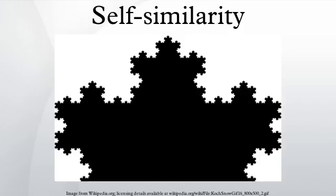In mathematics, a self-similar object is exactly or approximately similar to a part of itself.